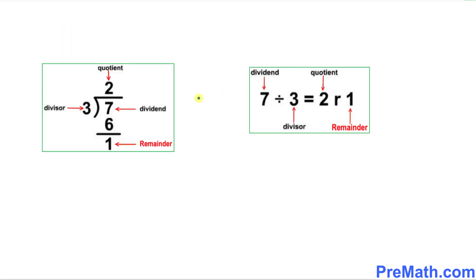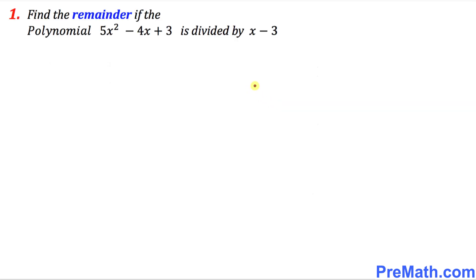Before we get started, let's go over the basics of this division algorithm. These are the anatomy or the body parts of the basic division process. You can see over here I put down which one is called divisor, quotient, dividend, remainder, and here is our very first example.